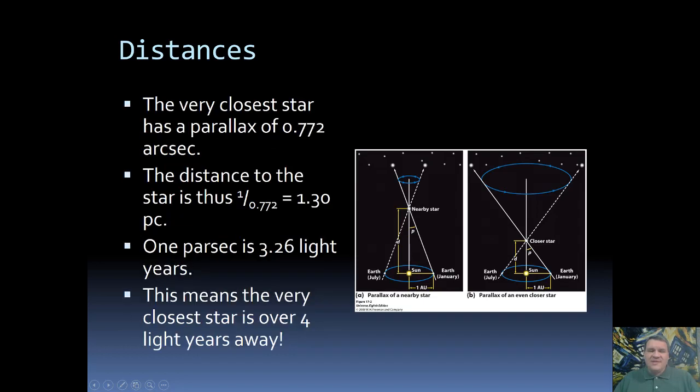So how do we actually use this? So let's take the example of the very closest star to us. Looking at its parallax angle it has a parallax angle of 0.772 arc seconds. And putting that into our equation we get 1 divided by 0.772 gives us 1.3 parsecs.